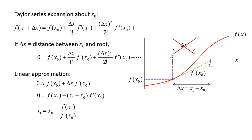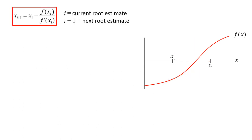This relationship allows us to calculate a new root estimate using the value of the current root estimate. If we use i to represent the current root estimate and i plus 1 to represent the next root estimate, we can generalize this equation as x_(i+1) equals x_i minus the function evaluated at x_i divided by the first derivative evaluated at x_i. This is the general equation for the Newton-Raphson method.